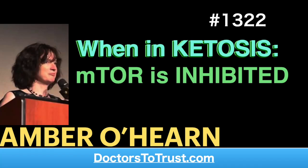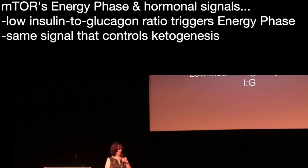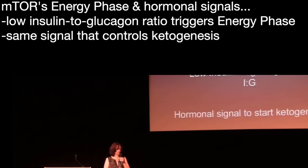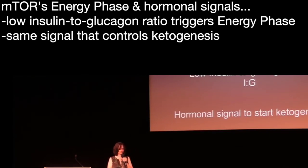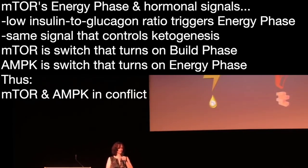Another way of looking at it is through the hormonal signals. You may have heard of the insulin-to-glucagon ratio — when that gets low, you get into the energy phase. This is the same hormonal signal that controls ketogenesis. If you're going to be ketogenic, you have to get insulin down relative to glucagon.